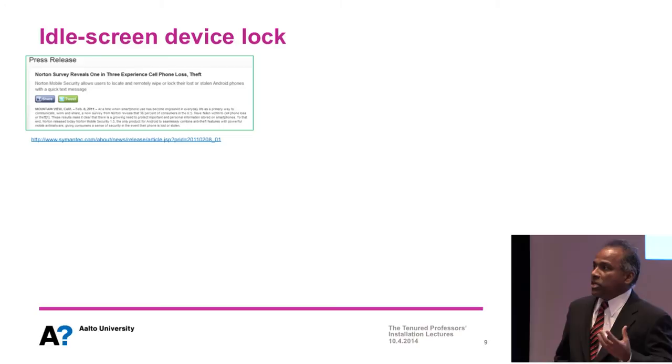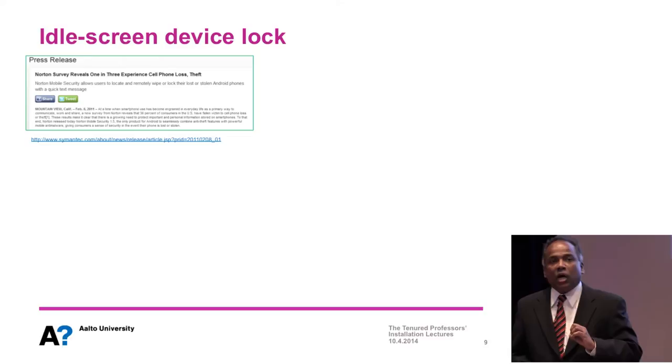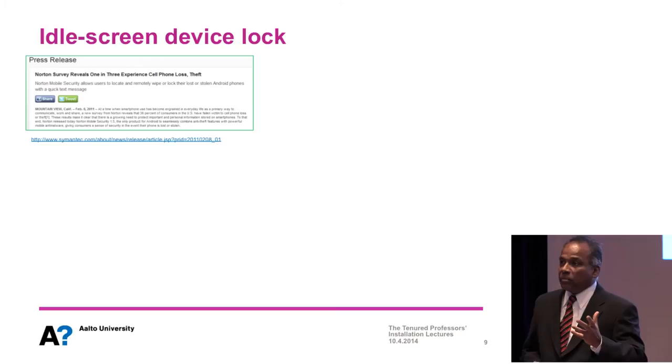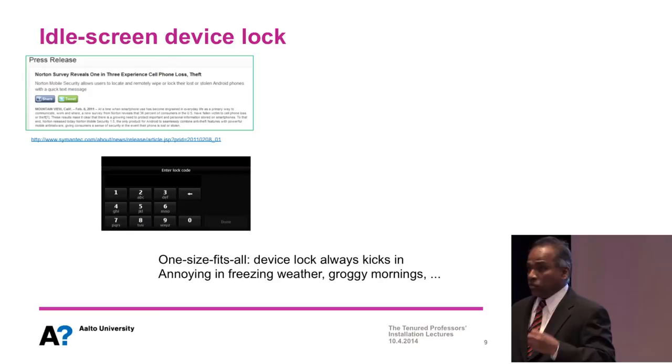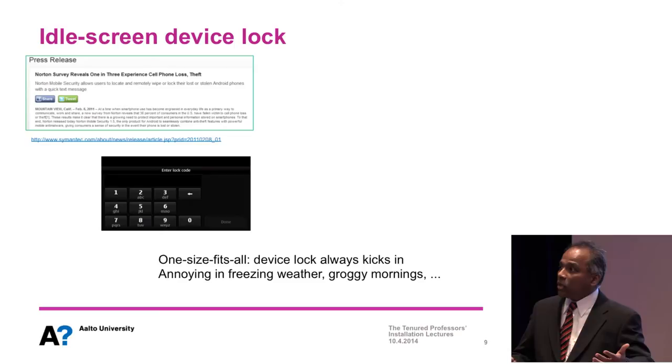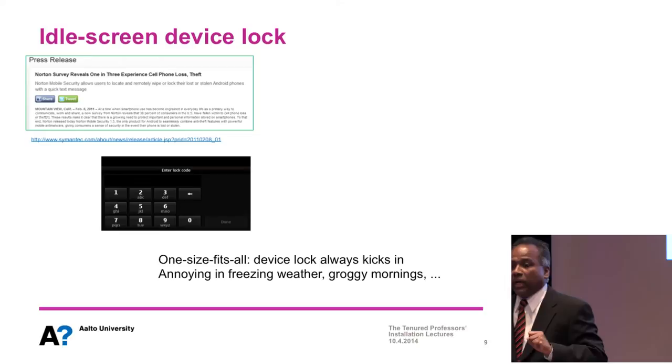The first example is the so-called idle screen device lock. Mobile devices are portable, and portability makes them inherently prone to loss or theft. On the other hand, mobile devices contain valuable information. One way to protect against loss or theft is to use idle screen device locks: after a period of idle time, the device locks, and before you can use it again you must type a password or go through some other process. This is not exactly a usable mechanism — people actually dislike it a lot.